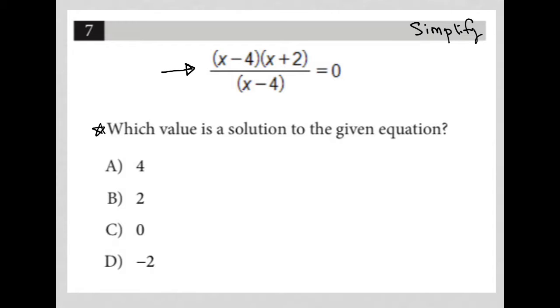So looking at what I have in this equation, it does seem that I can simplify this. I can simplify this by, first of all, cancelling out this x minus 4 over x minus 4 here, which would lead me to have x plus 2 equals 0.